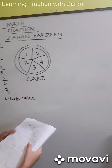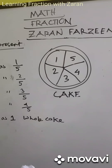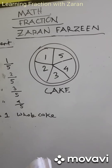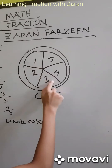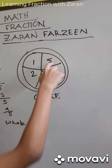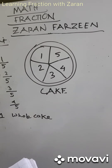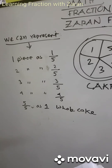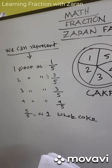Suppose your father brought a cake for you. You divided the cake into 5 pieces: 1, 2, 3, 4, 5 — these are the pieces of the whole cake. So each piece becomes a fraction of the total cake.